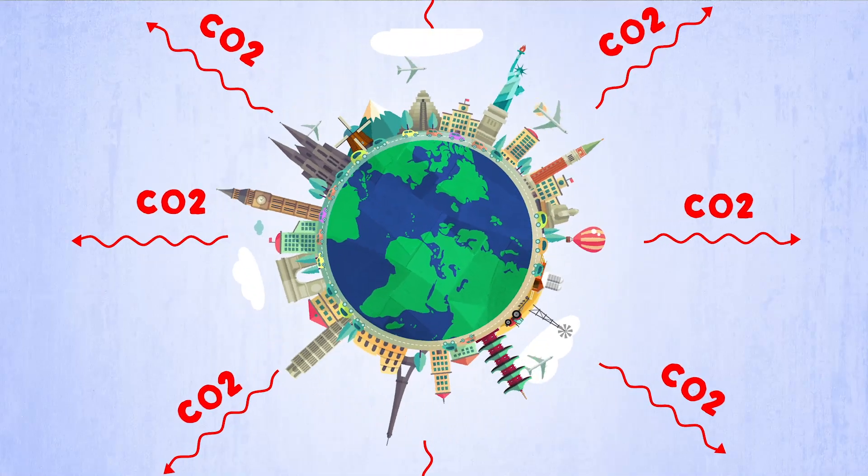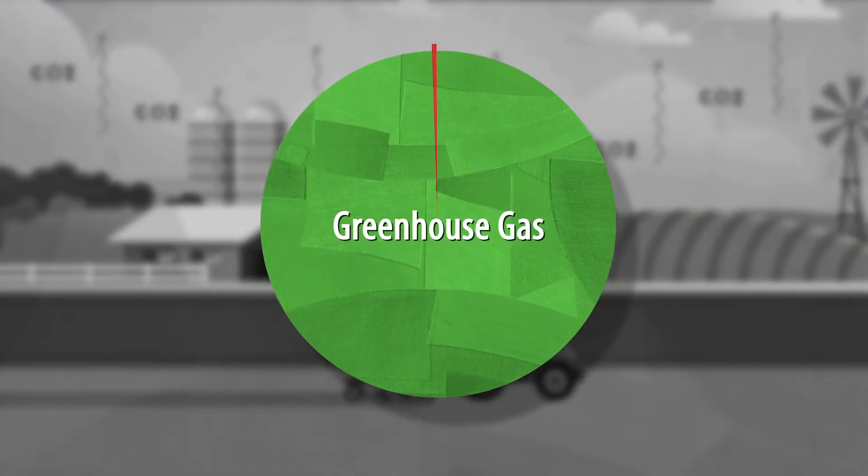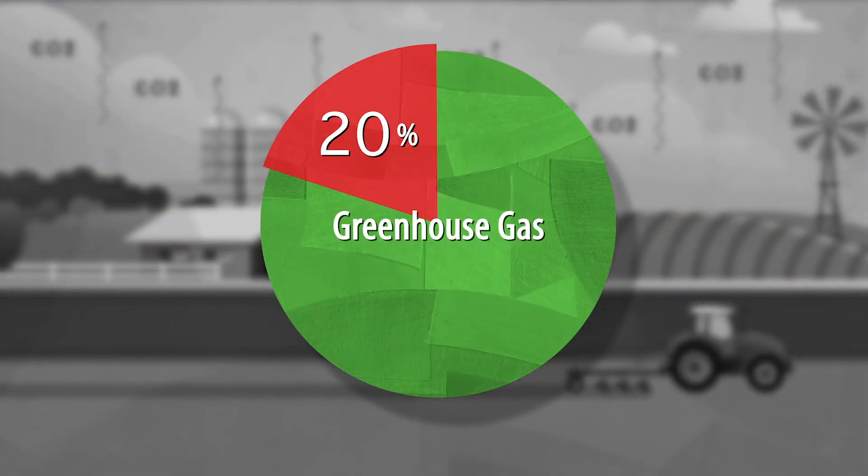Climate change is threatening the future of life on Earth. Today, agriculture is the source of as much as 20% of the gases that cause global warming.